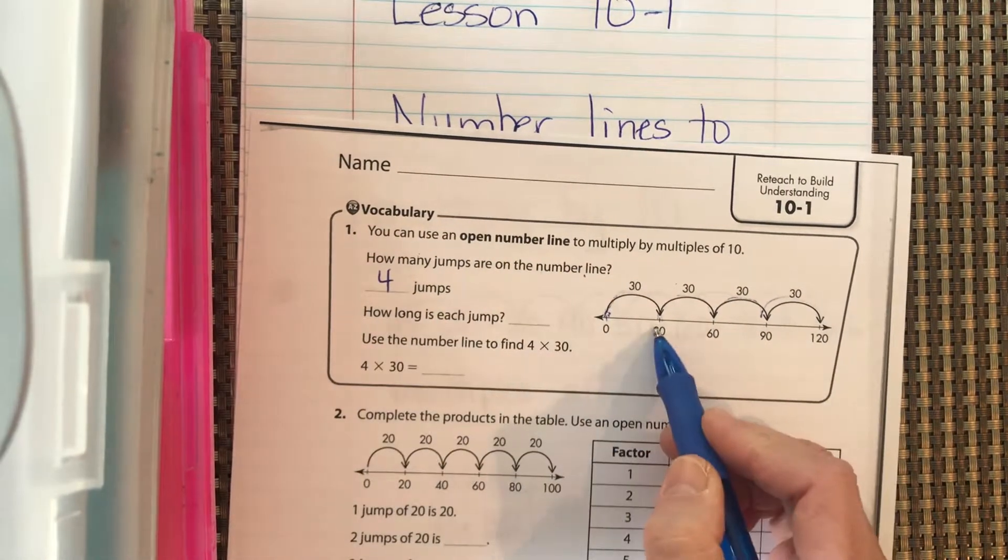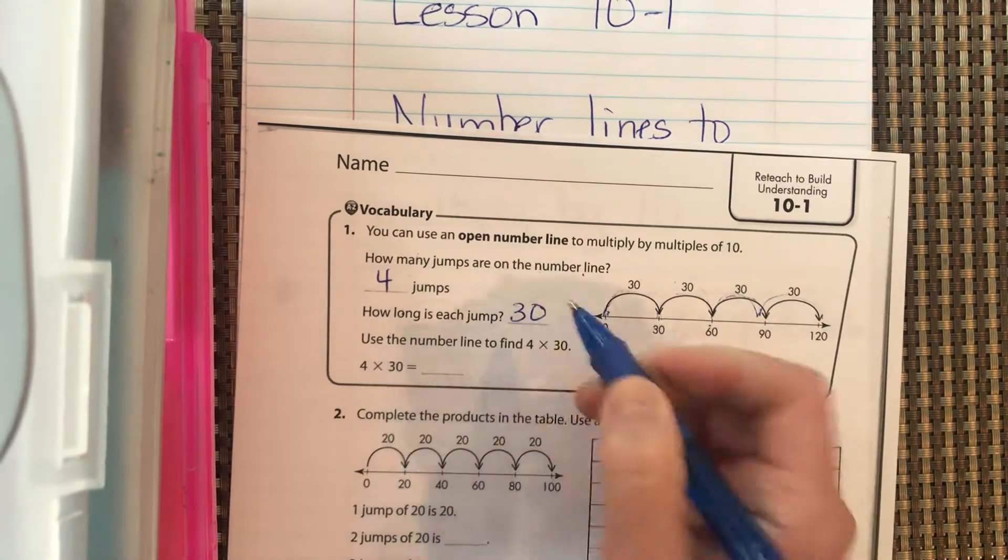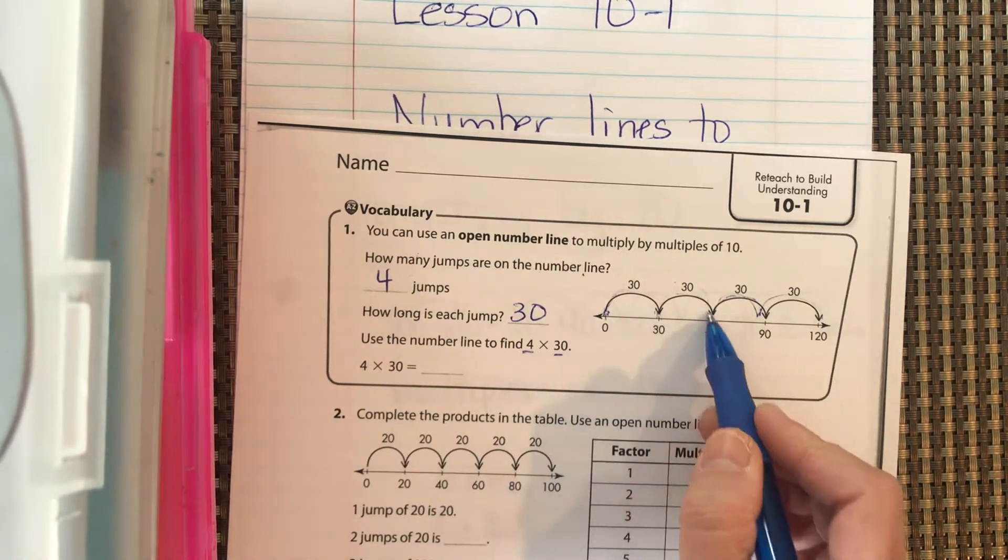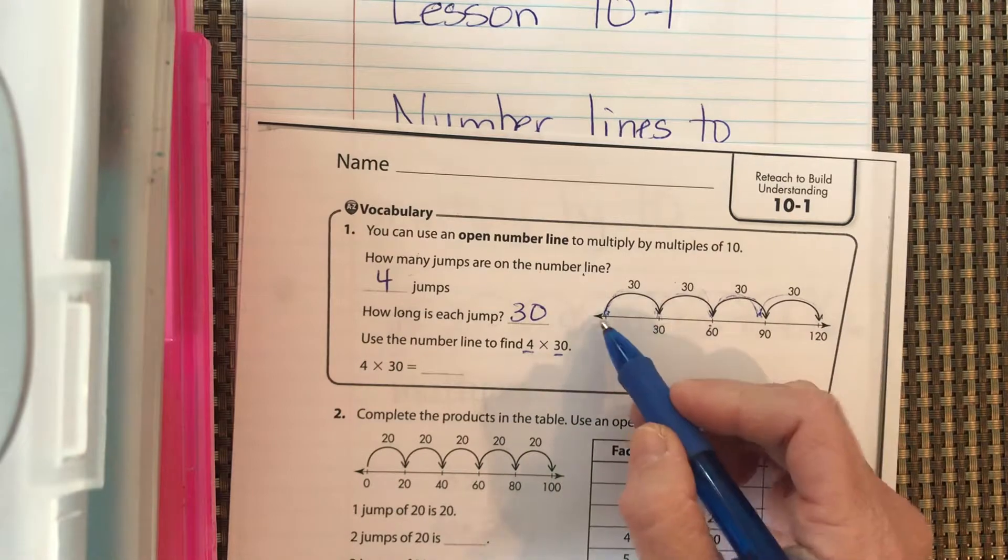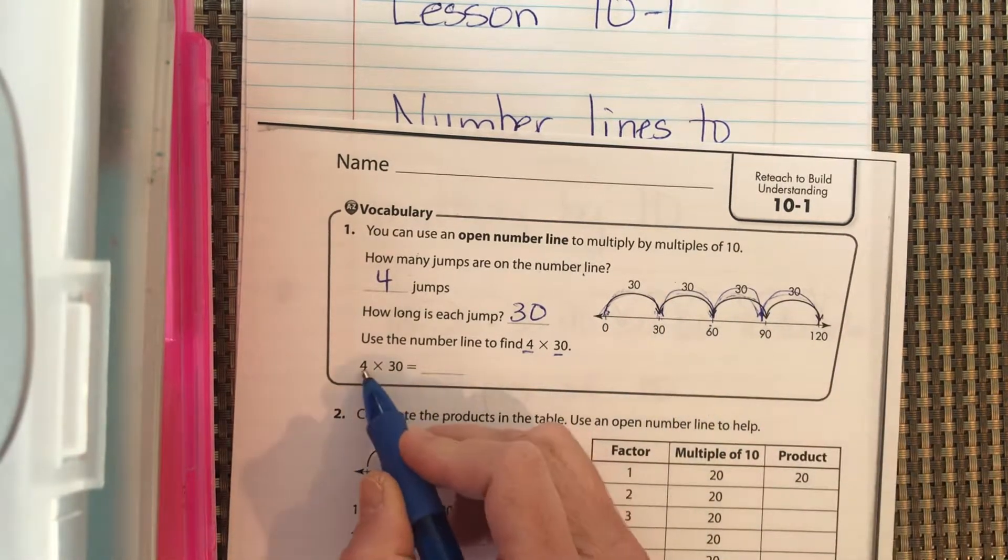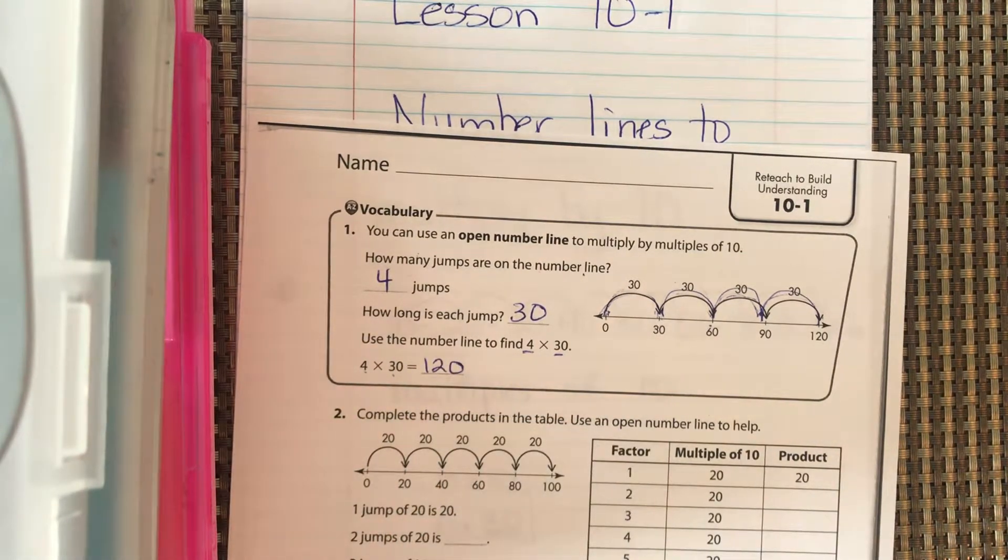How long is each jump? Well, they're all 30, right? 30, 30, 30, 30. So let's use the number line to find 4 groups of 30 because we have 4 groups of 30 each. So we go 30, 60, 90, 120. So 4 times 30 is 120.